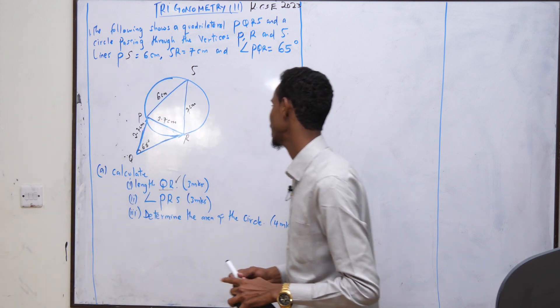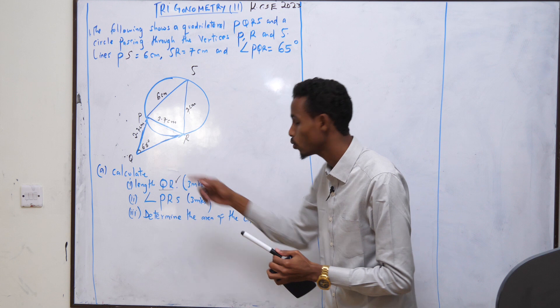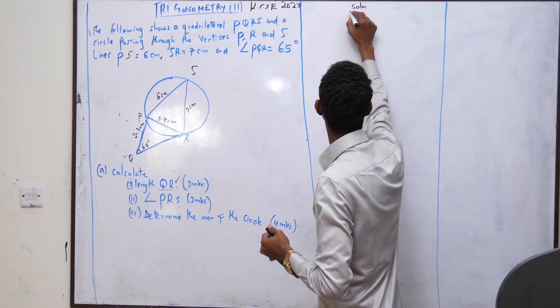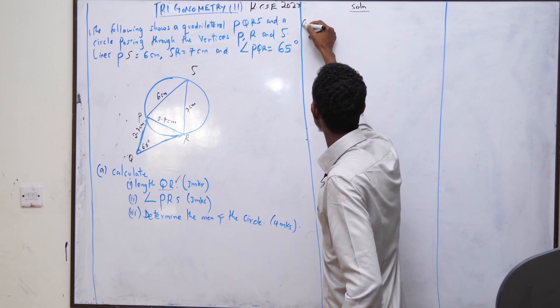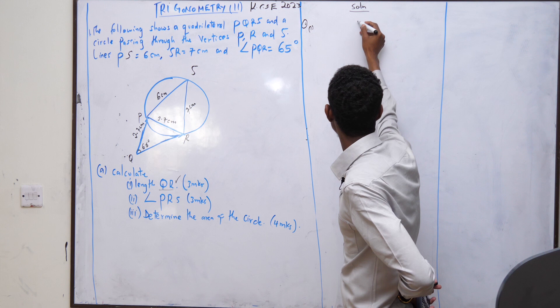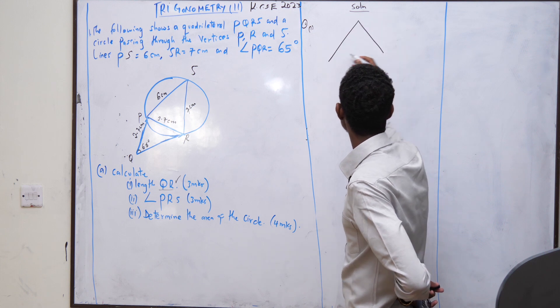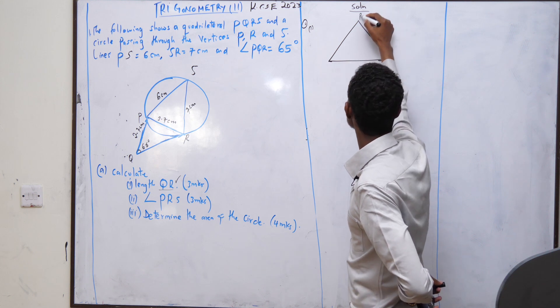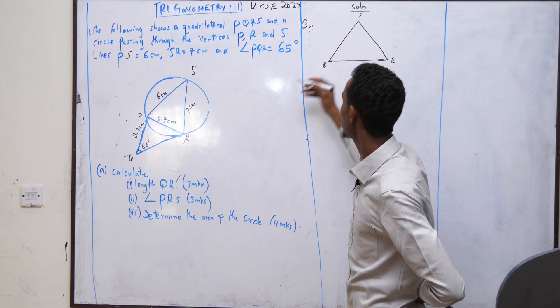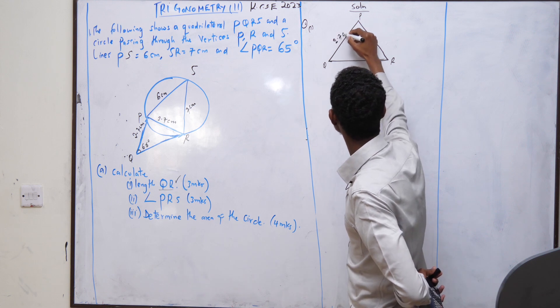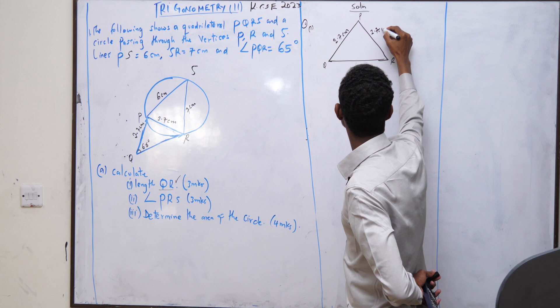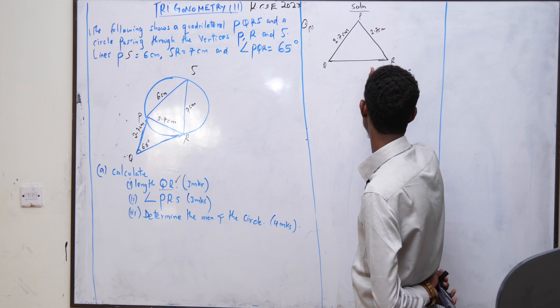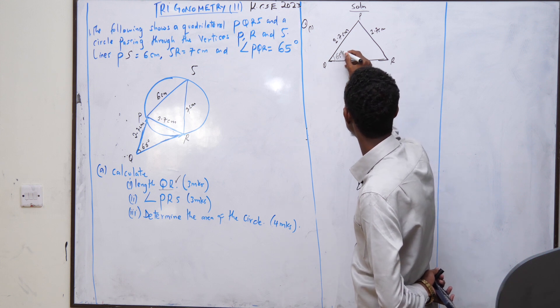First question: calculate length QR. Now, take out that solution. Solution for A, Roman 1. Let's take the triangle here. You can see the triangle. We have here point P, point Q, and point R. Again, we have 2.7 centimeters. We are asked to get, here we have 65 degrees.